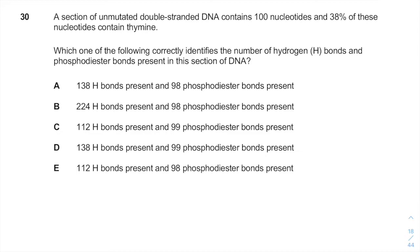A section of unmutated double-stranded DNA contains 100 nucleotides. It means we have a double-stranded DNA, and each side is 50 nucleotides, because it is double-stranded, and in total we have 100 nucleotides. 38% of these nucleotides contain thymine.